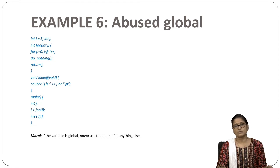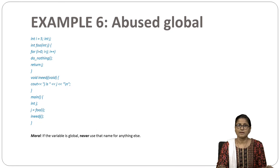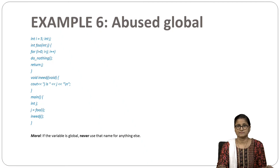The abused global bug illustrates confusion between global and local variables. In function foo, j is local and i is global. Since i is being used as a local variable, this is almost certainly wrong. In main, j is local, so when it gets set by a call to foo, the global value is not being set. The moral is: if a variable is global, never use that name for anything else.